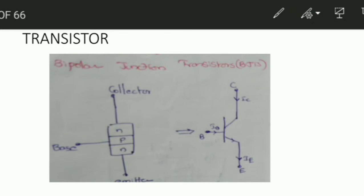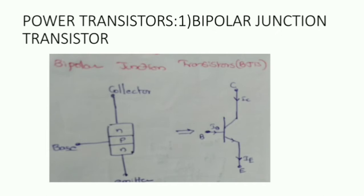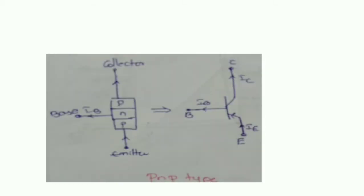The symbol of the Bipolar Junction Transistor has three terminals: emitter, base, and collector. This is the PNP transistor and this one is the NPN transistor. To remember: if the arrow mark is outside, it is an NPN transistor. If the arrow mark is inside, then it is the PNP transistor.